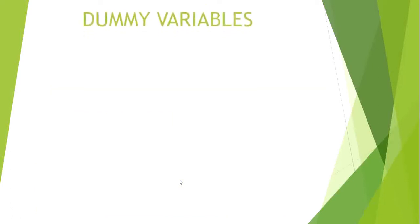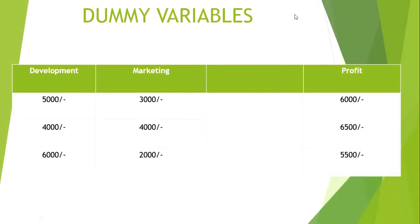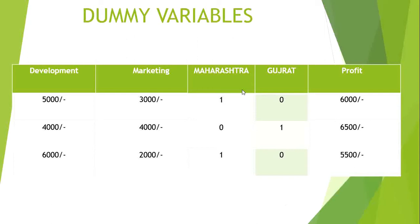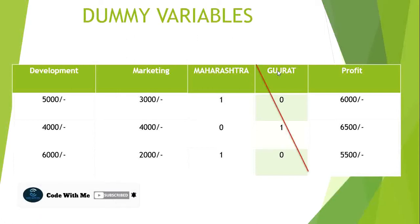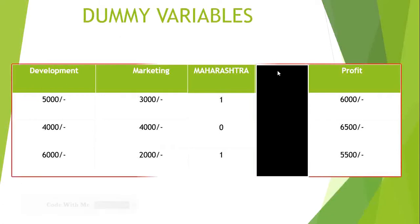After creating the dummy variable columns, I will update the dataset. I will remove the original state column and add these two new columns — one for Maharashtra and one for Gujarat. But the problem is that we cannot use both of these two columns. We need to remove one column. You can remove either Maharashtra or Gujarat — that's up to you. Suppose we remove Gujarat. The final dataset will have only the Maharashtra dummy column, and we will use this dataset to train the model.